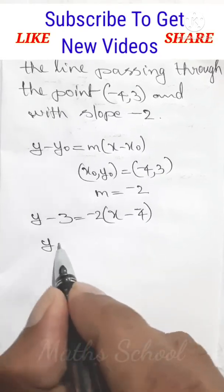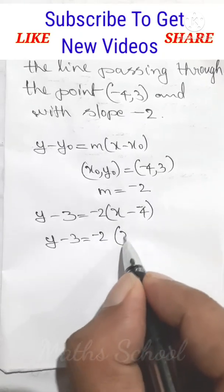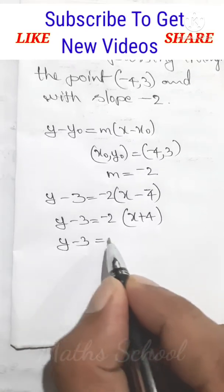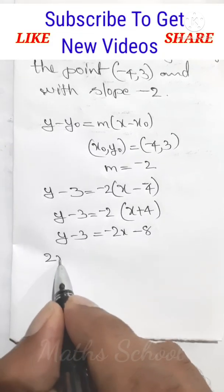x minus minus 4, or y minus 3 equals -2 times x plus 4, or y minus 3 equals -2x minus 8.